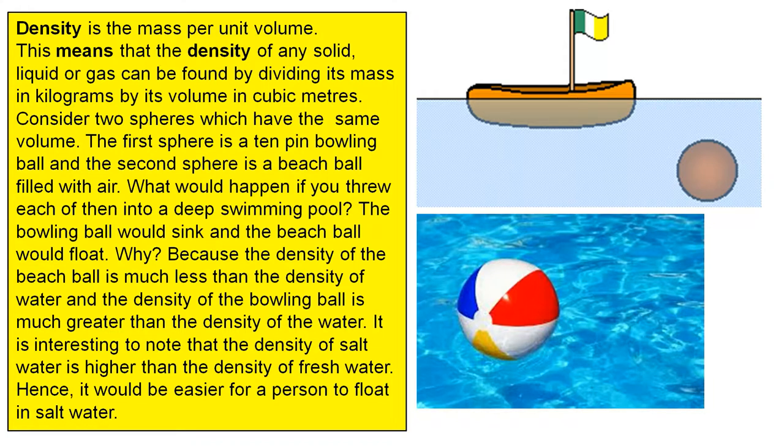The first sphere is a ten pin bowling ball and the second sphere is a beach ball filled with air. What would happen if you threw each of them into a deep swimming pool? The bowling ball would sink and the beach ball would float.